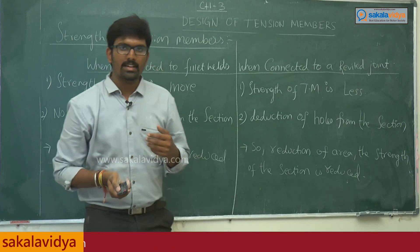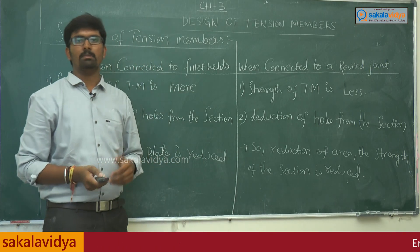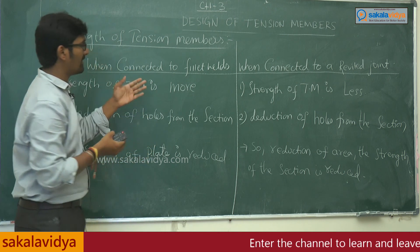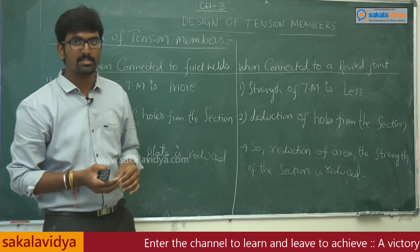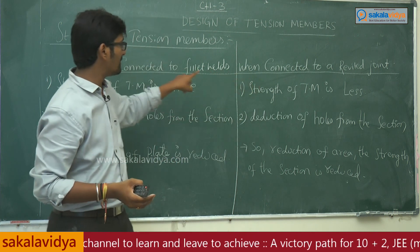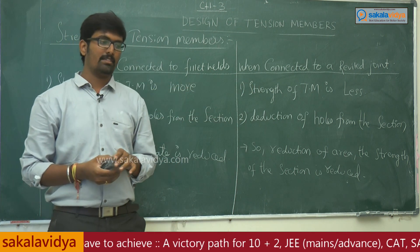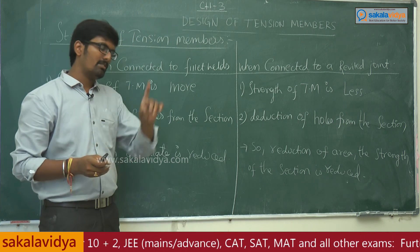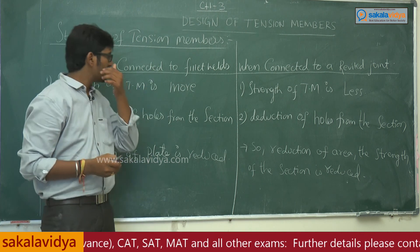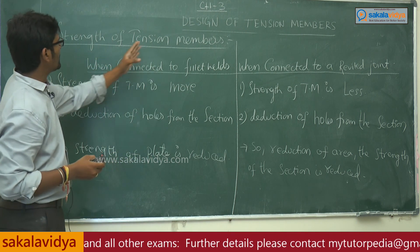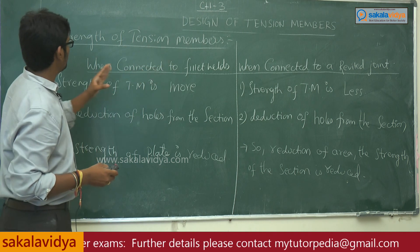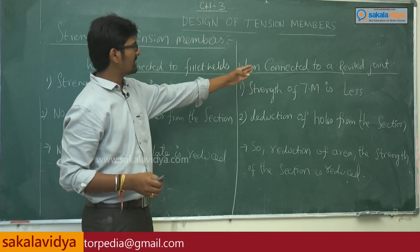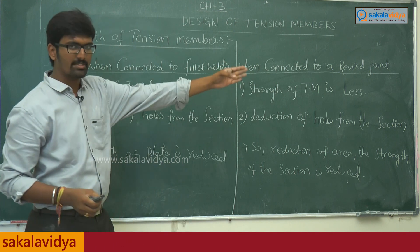Now let us differentiate the strength of tension members when subjected to fillet welds versus when connected to riveted joints. A brief description of riveted joints and fillet welds was already given in Chapter 1. The strength of tension members when connected to a fillet weld is compared to the strength when connected to a riveted joint.